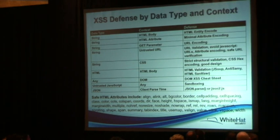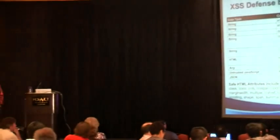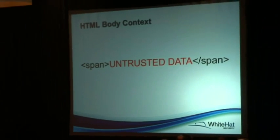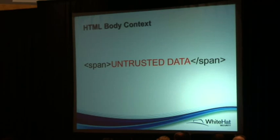Based on the context of where untrusted data lands in an HTML document, you need to do something different. Do we tell developers just enough to stop XSS and cover 90% of vectors, or tell them everything about XSS defense and overwhelm them so they give up? If untrusted data lands in a body context — between two tags — we want to do HTML entity encoding. In .NET, I'll use anti-XSS to encode for HTML.